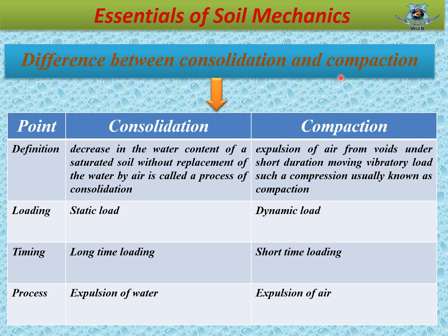Difference between consolidation and compaction: Consolidation is the decrease in the water content of a saturated soil without replacement of the water by air. Compaction is the expulsion of air from voids under short-duration dynamic load; such a process is known as compaction. To achieve consolidation, static load is required, whereas to achieve compaction, dynamic load is required. Consolidation is time dependent and requires a long time, whereas compaction requires a short time. Consolidation is achieved due to expulsion of water; on the other hand, compaction is achieved due to expulsion of air.